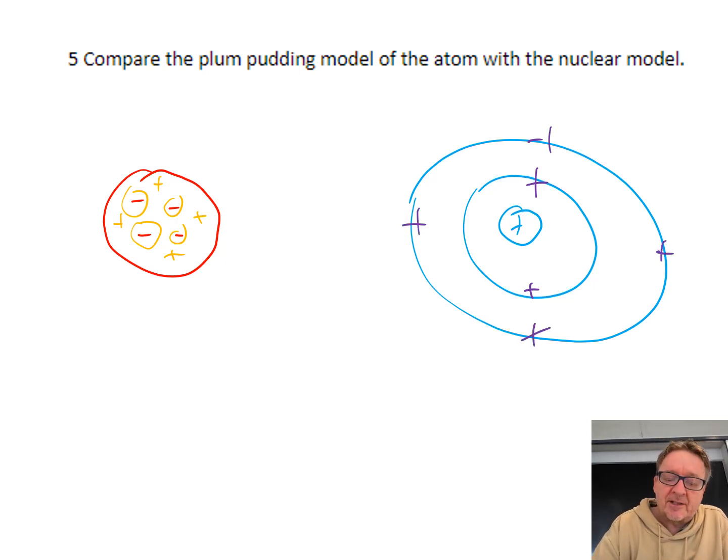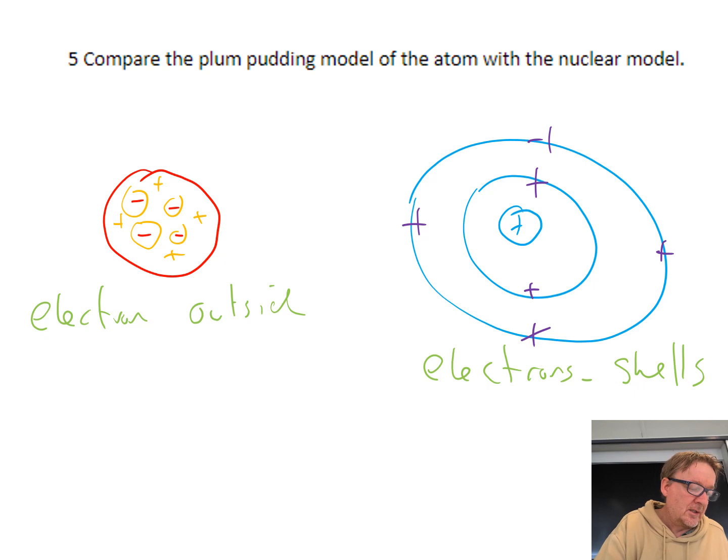The comparison: firstly, electrons on the plum pudding are on the outside, while electrons on the nuclear model are in shells. The next one is that the plum pudding is like a positive sphere, whereas this one has a positive nucleus.